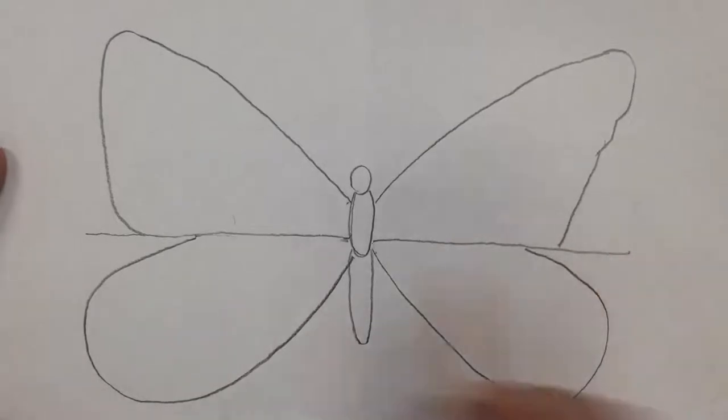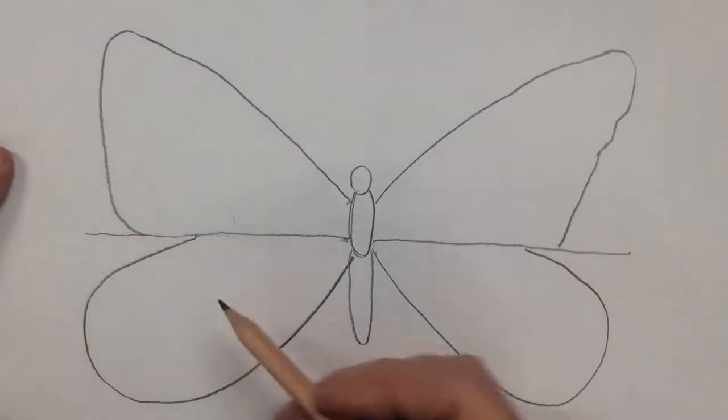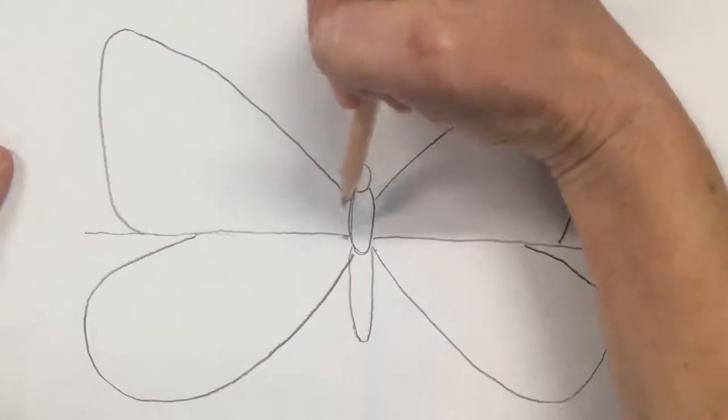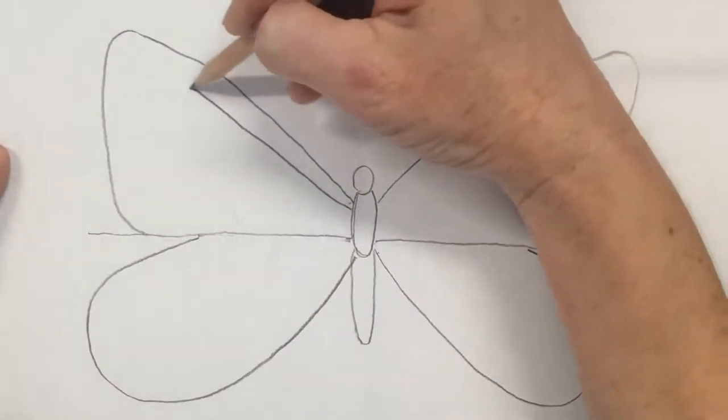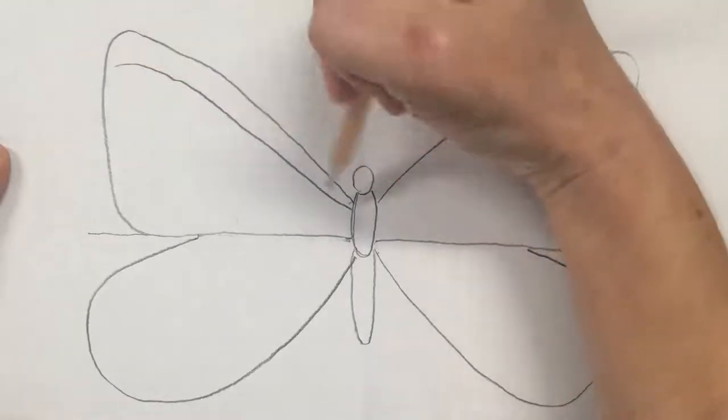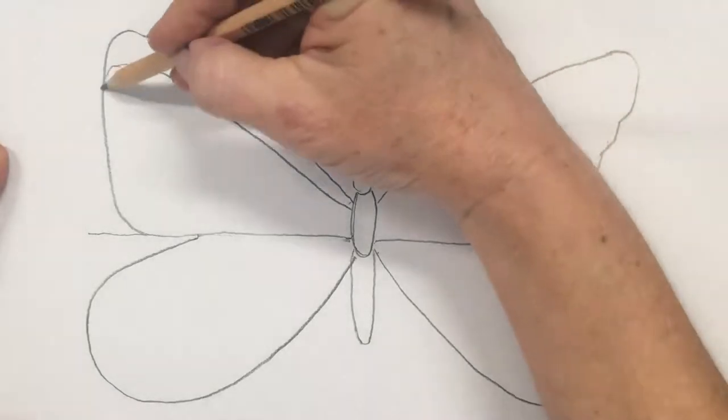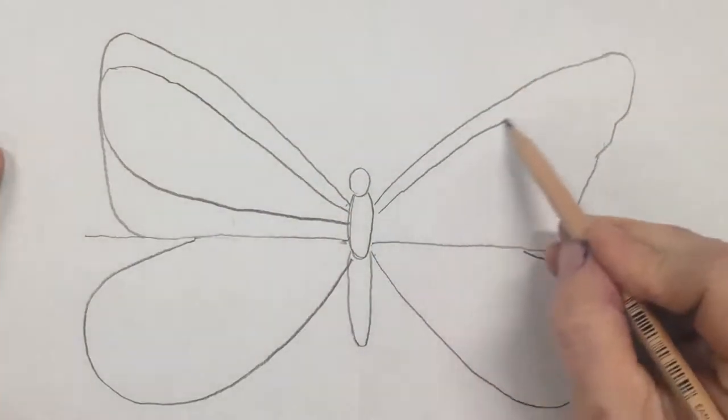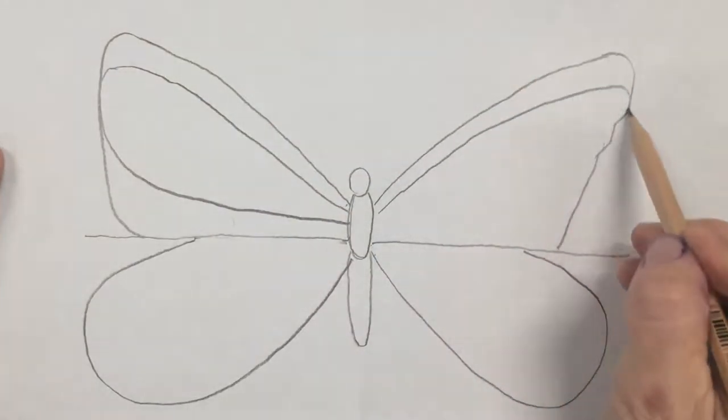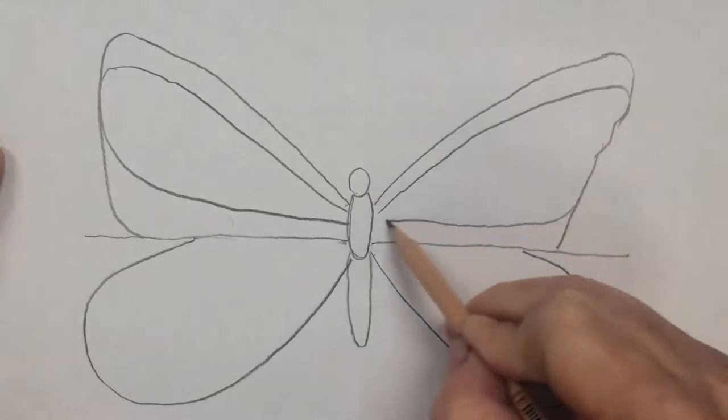You can rub out any bits that are extra. And then we're going to do the black marking where the black goes. It's just a parallel line here, back to the body, parallel again, touch right at the edge, back to the body.